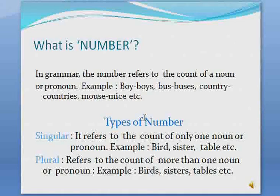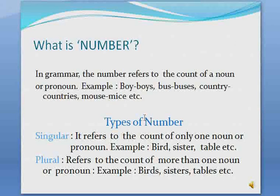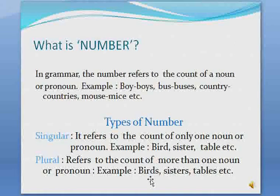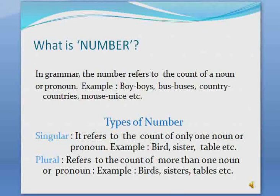Plural refers to the count of more than one noun or pronoun — it can be two, three, hundred, thousand, million, anything more than one. Whenever something is more than one, we call it plural. Examples: birds, sisters, tables, etc. The same words become plural: bird→birds, sister→sisters, table→tables. For instance, 'The birds are flying in the sky' means more than one bird.